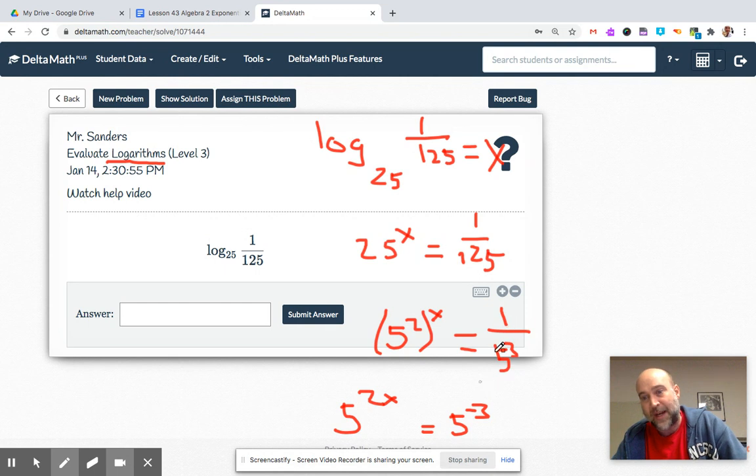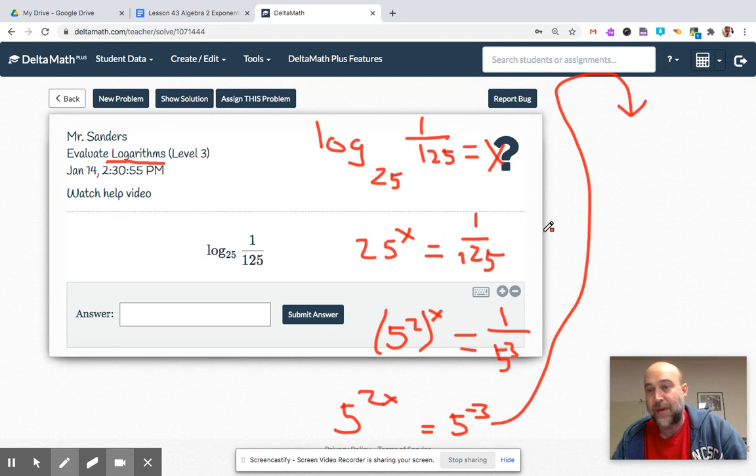5 to the 2x equals 5 to the negative 3. Make sure you kind of recognize that's what this turns into. Negative exponents means reciprocal. So if the bases are the same, exponents are the same. Divide by 2, x is equal to negative 3 halves.